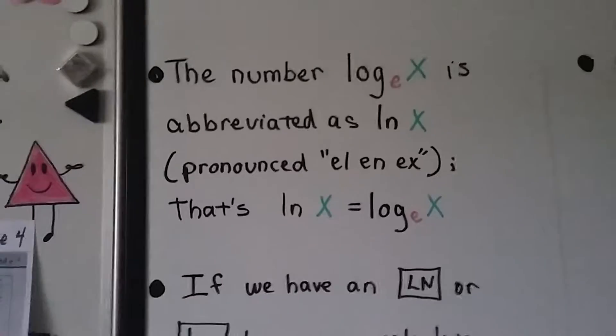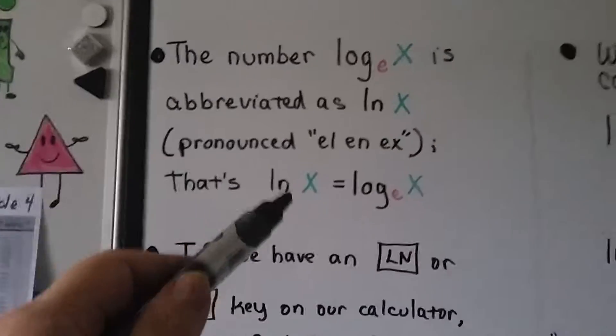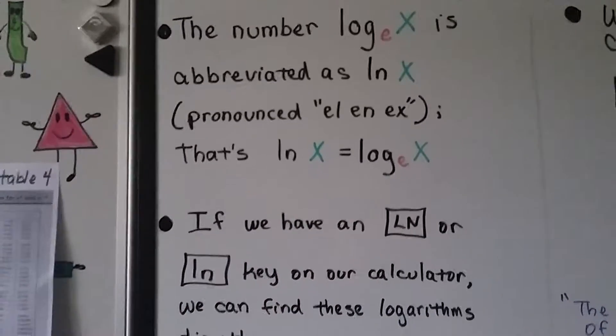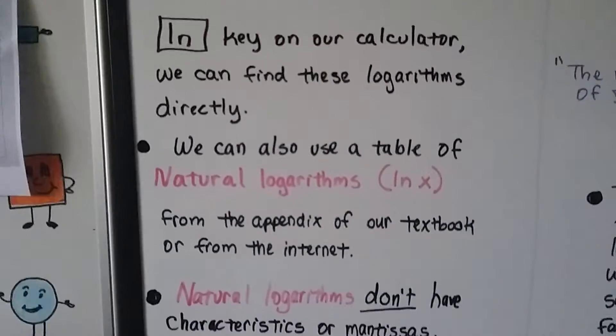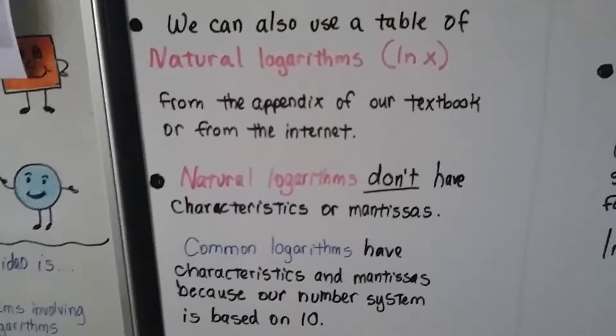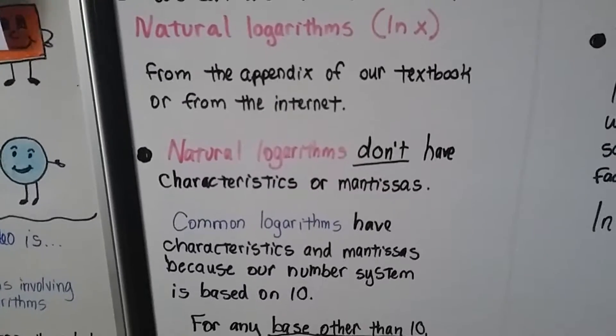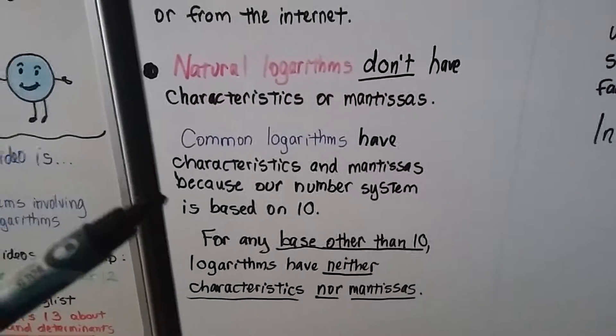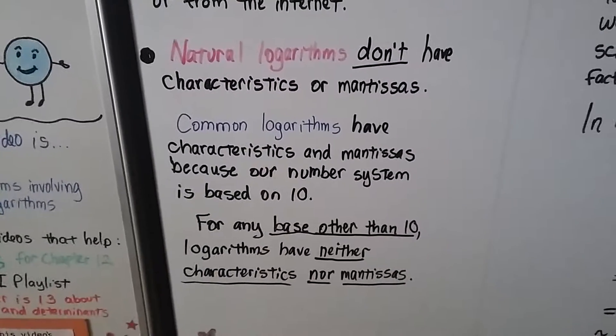The number log base e of x is abbreviated as ln x. That's how we pronounce it, ln x. That's the natural logarithm of x. ln x equals log base e of x. If we have this ln or this lowercase ln key on our calculator, we can find these logarithms directly. We can also use a table of natural logarithms, logarithms ln x, from the appendix in our textbook or from the internet. Natural logarithms don't have characteristics or mantissas. We talked about that in the previous videos. Common logarithms have characteristics and mantissas because our number system is based on 10. But for any base other than 10, logarithms have neither characteristics nor mantissas.